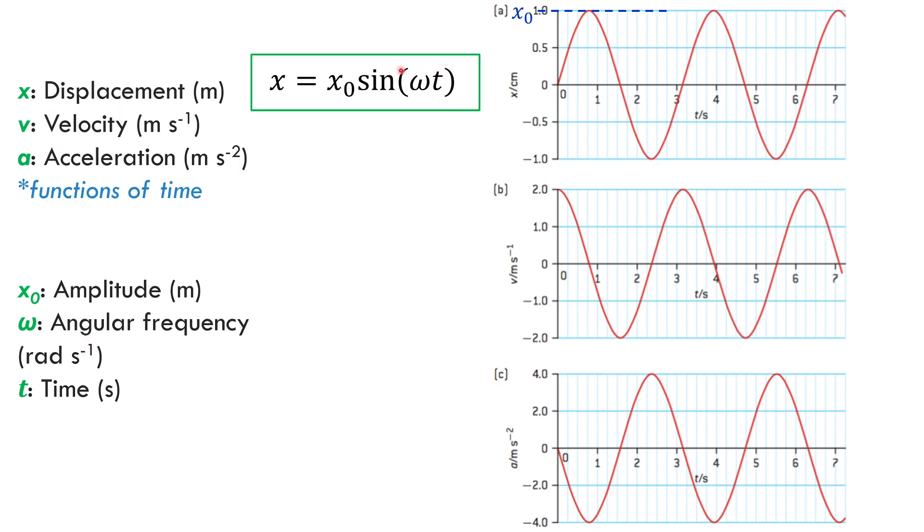We're going to use a sine function. If you need any math help with the math of a sine function, there's some resources on Schoology, but a simple sine graph, sine of omega t, will plot what happens to the displacement of the particle as it moves. So here are the variables in your data booklet equation. X represents the displacement of the particle as a function of time. So this will give me the position or displacement, really, at any given time.